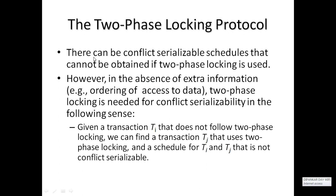There can be conflict-serializable schedules that cannot be obtained if two-phase locking is used. However, in the absence of extra information about the ordering of data access, two-phase locking is needed for conflict serializability. Given a transaction Ti that does not follow two-phase locking, we can find a transaction Tj using two-phase locking scheduled with Ti that is not conflict-serializable.